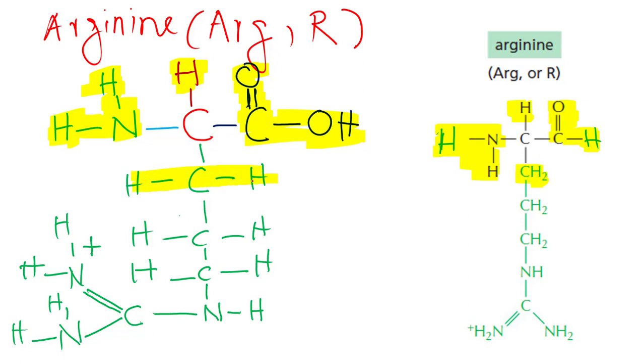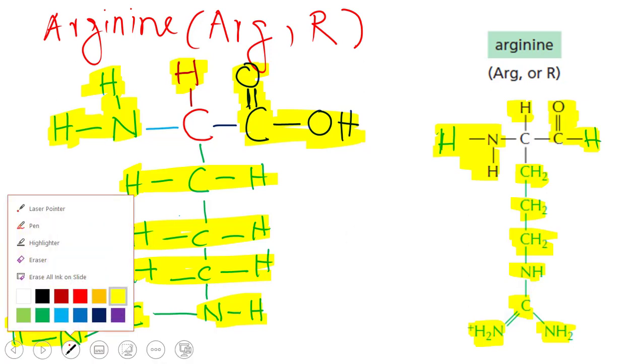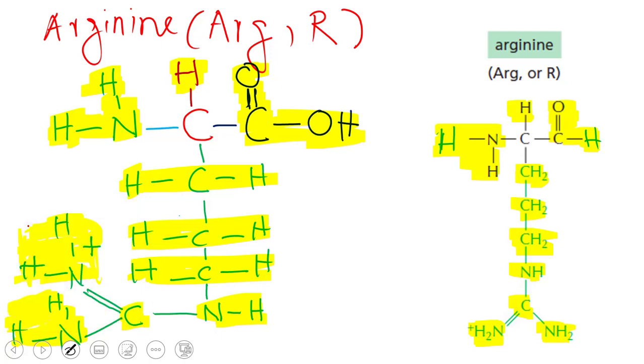So now we have its R group: CH2 CH2 CH2 three times, NH, and to that NH we have carbon. There is a carbon atom, then there is NH2, and NH2 for the second time. So this is our next amino acid arginine and this is its R as you can see.